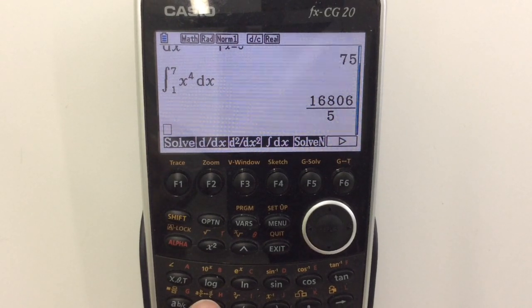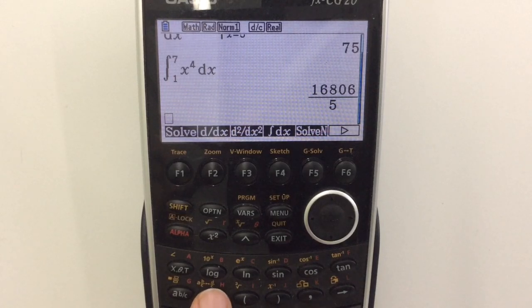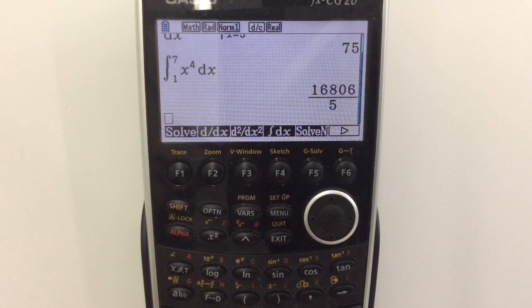We can press this button all the way down here, F to D, to convert it to a decimal if we prefer. So it's very simple. We can work those out nice and easily. And as I say there's a range of other options there for you if you want to be able to do some other things with basic calculus.